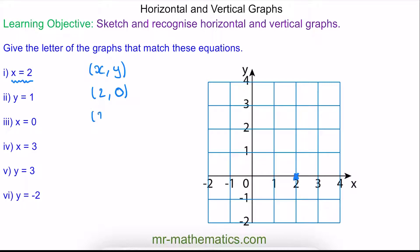We could have a different coordinate when x is 2 but y is 3, which would be here. Or when x is 2 and y is negative 1, which would be here. You can see these three coordinates can be joined together by a straight line. So x equals 2 is a vertical line that runs parallel to the y-axis and crosses through x equals 2.